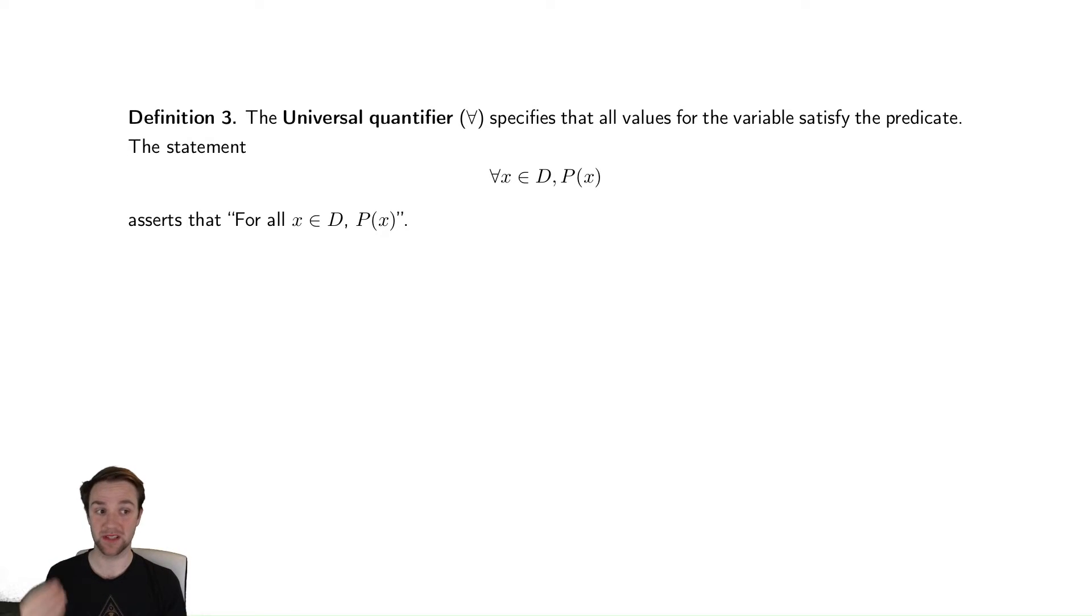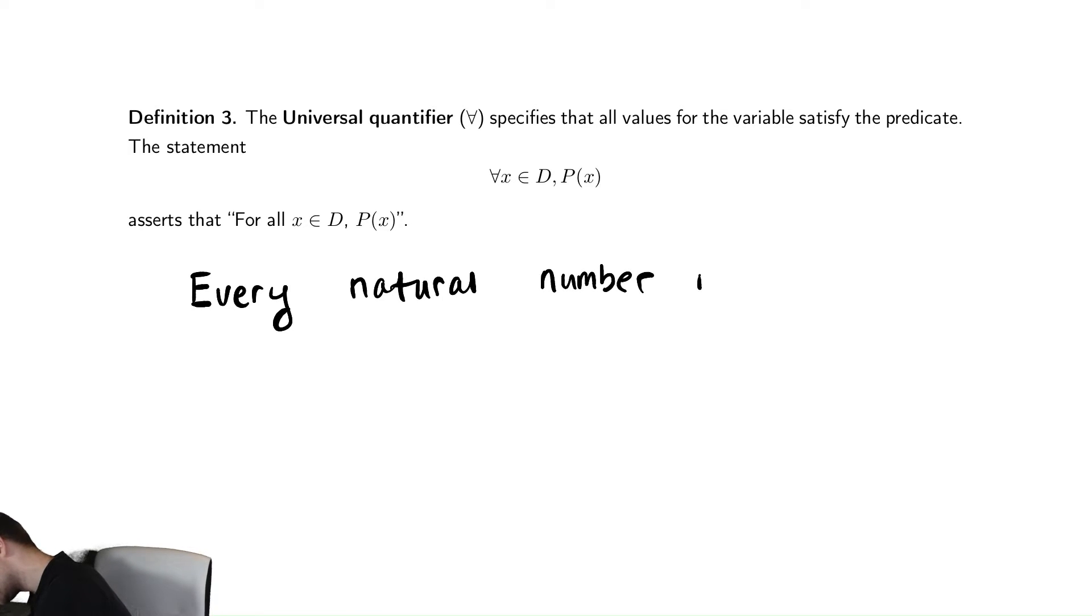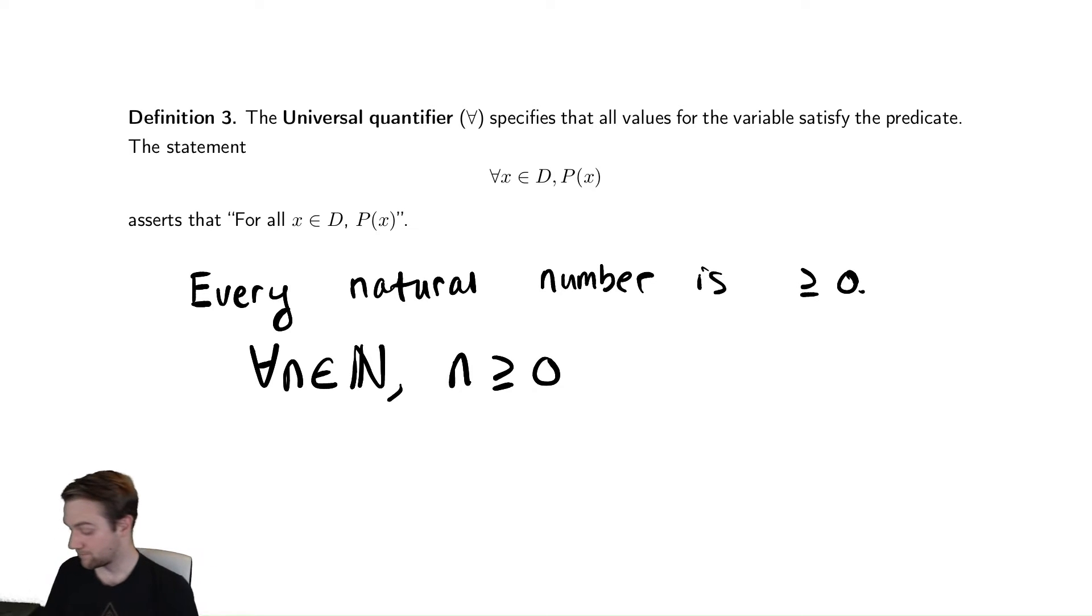So our first thing is called the universal quantifier. It's going to say every single thing of type X is satisfying the statement. So this might be that every natural number is greater than or equal to zero. We could write that as something like this. For all n in the natural numbers, n is greater than or equal to zero. You say for everything of a certain type, in this case, our type being natural number, it satisfies some mathematical statement. This is saying every single thing.